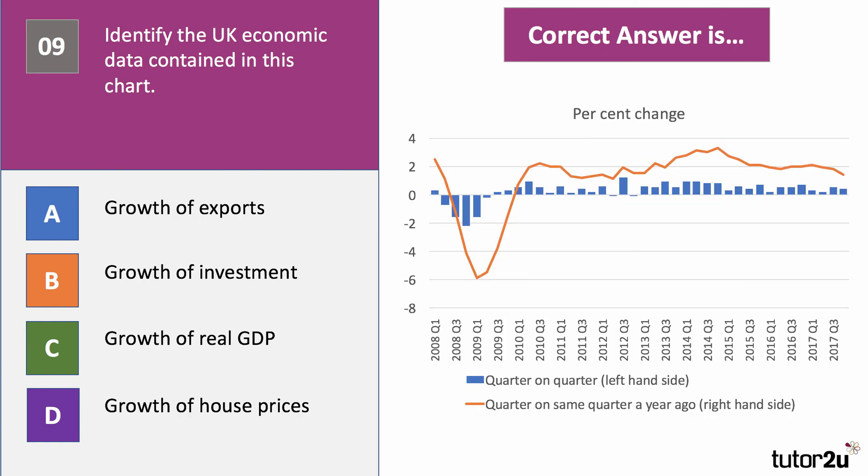Chart nine: identify the UK data shown in this chart. There is one line showing the quarter-on-quarter percentage change. Is it the growth of exports, the growth of investment, the growth of real GDP, or the growth of house prices? Have a go at chart nine.